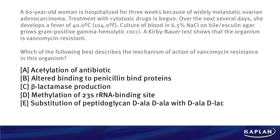Choice A says acetylation of the antibiotic. B, altered binding to PBPs or penicillin binding proteins. C says beta-lactamase production. D, methylation of the 23S rRNA binding site. Or E, substitution of the peptidoglycan D-Ala-D-Ala with D-Ala-D-Lac. Take a few moments and select what you think is the best answer.